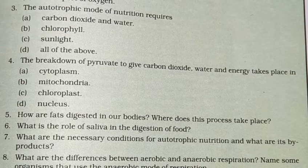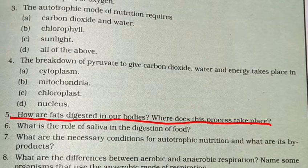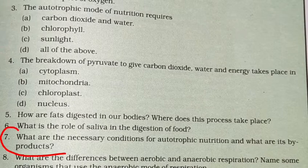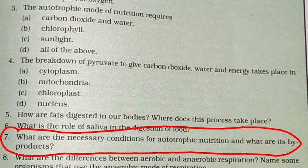Next question: how are fats digested in our body? Fats are digested in form of small globules by the emulsification process, which takes place in the small intestine. What is the role of saliva? Saliva starch ko maltose mein break karti hai. Necessary condition for autotrophic nutrition: water, sunlight, and chlorophyll — so photosynthesis perform karenge. By-product is oxygen.